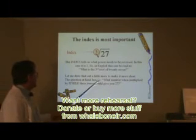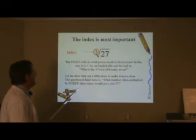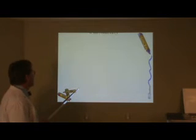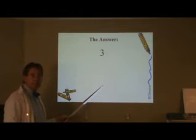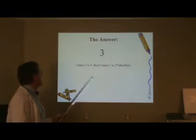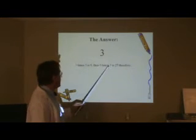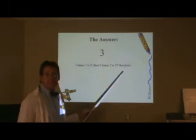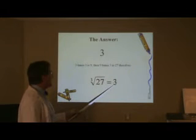Let me draw it out a little more and make it more clear. Nah, I just did it already. What number, when multiplied by itself three times, would give you 27? The answer? Three. I'll prove it to you. Three times three is nine. Though then nine times three is 27. Therefore, the cube root of 27 is three.